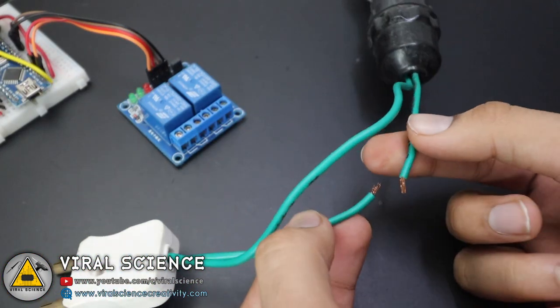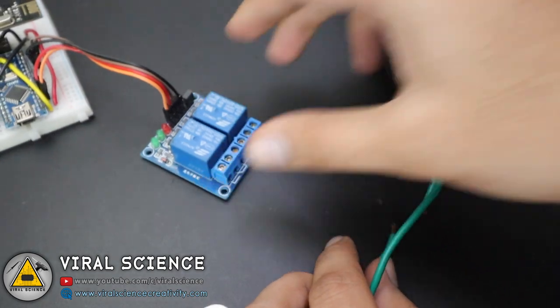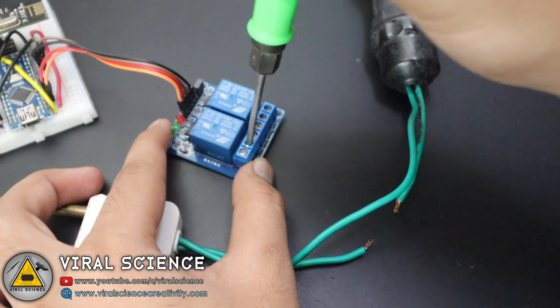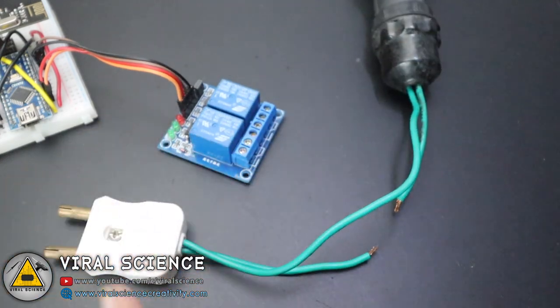Here I have a two-pin AC connector connected with the bulb socket, and I have cut one of its wires. Now we'll connect both ends of this wire to the relay module, and the relay will act as a switch.